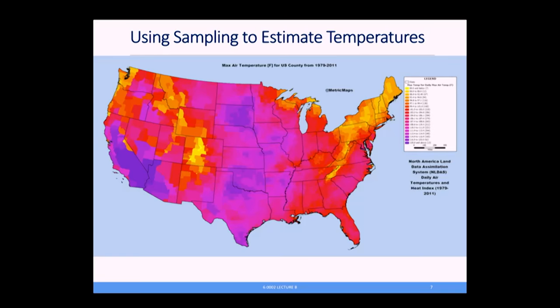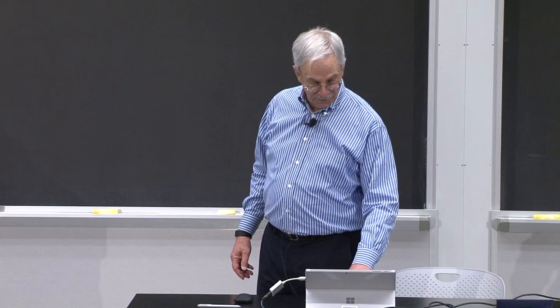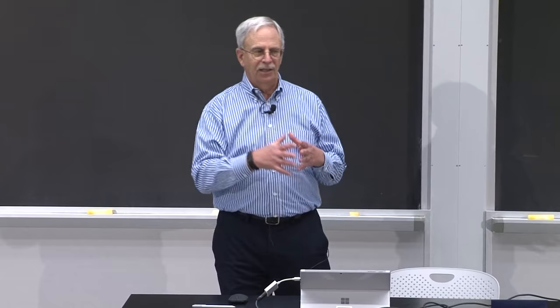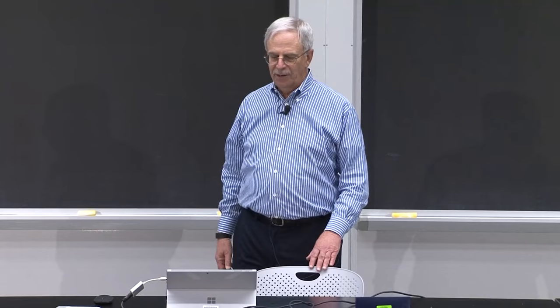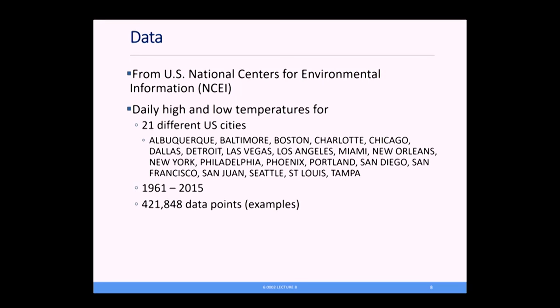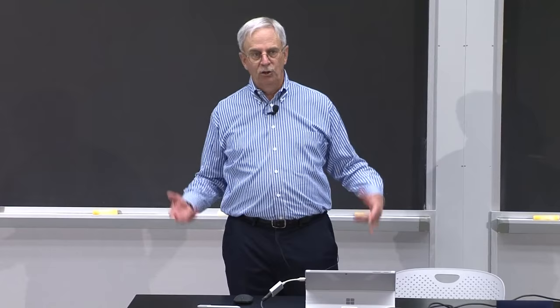Let's look at an example. This is a map of temperatures in the United States. Our running example today will be sampling to get information about average temperatures. The data we'll use is real data from the US Centers for Environmental Information — daily high and low temperatures for 21 different American cities every day from 1961 through 2015. It's about 422,000 examples in total. A fairly good-sized data set.